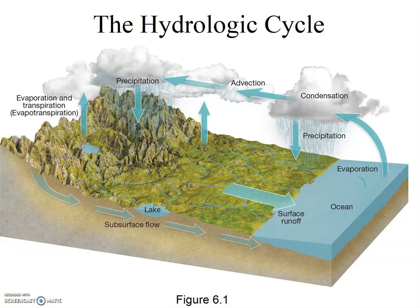We're going to start to work our way through the water cycle. We won't cover all the pools and processes this week — some will come later in the semester. However, we will work through the pools and processes that relate in some way to atmospheric moisture. As you recall, the chapter we read this week was called atmospheric moisture, which is simply the humidity in the air around you, and is one very important pool in the hydrologic cycle.